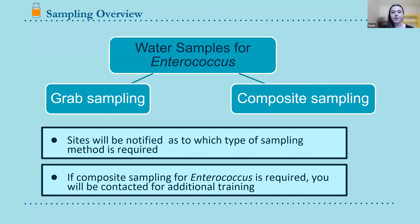For enterococcus sampling there are two major types: grab sampling and composite sampling. Grab sampling is the most common and default type. If you are doing composite sampling or would like to know more, feel free to email us — contact information will be at the end of the presentation — or ask your local health inspector.